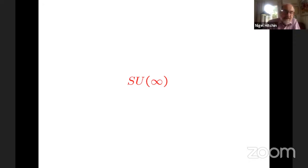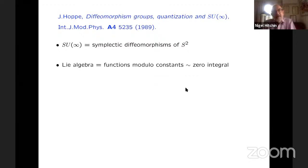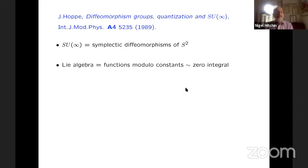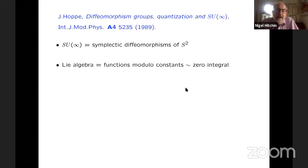So now the second theme, which may be perhaps less familiar, is this notion of SU infinity. This is something I learned many, many years ago from a physicist, from Jens Hoppe. He wrote a paper about this all those years ago. And what it says is that we should think of SU infinity — SU(N) where N is infinity — as the group of symplectic diffeomorphisms of the two-sphere.